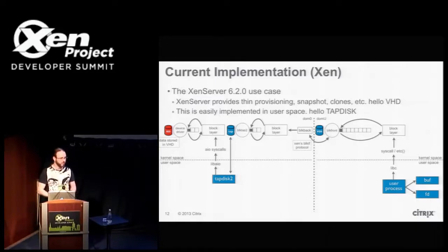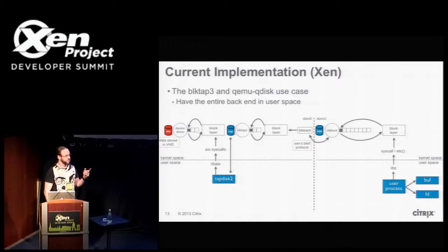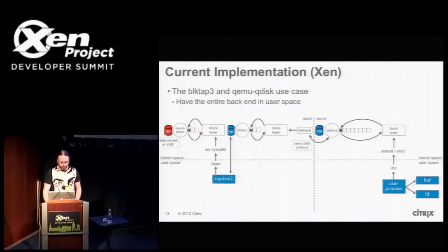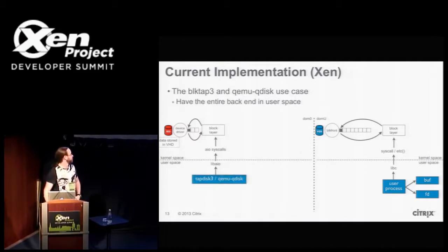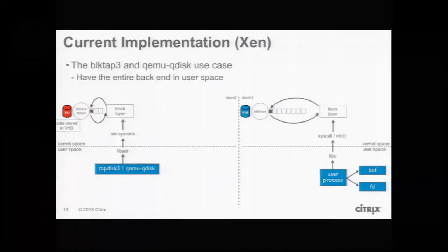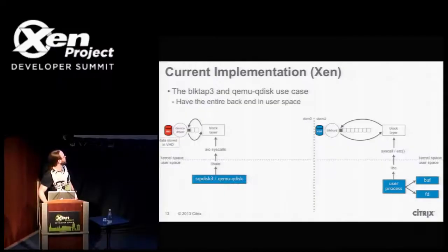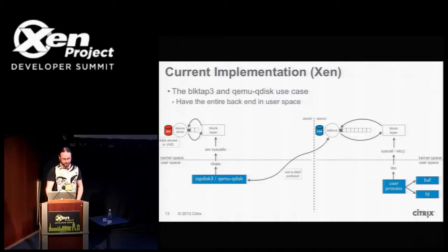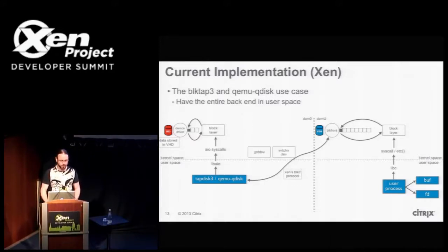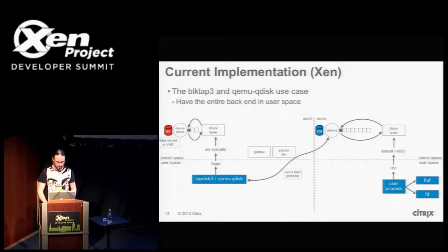This has been done historically, well before people started thinking about SSDs and other concerns. There is a slightly different use case which is the one with QEMU, QDisk and tap disk 3. What we do there is get rid of block tap 2 and replace tap disk with QEMU. The difference is that QEMU doesn't use lib.io — it uses POSIX I/O, which is more portable. And we get this user process to talk straight to block front through the grant device and the event channel device to do grant mapping and handle interrupts.